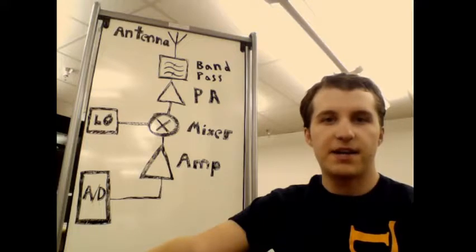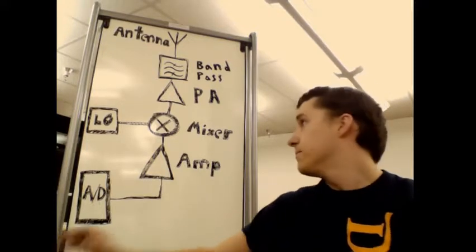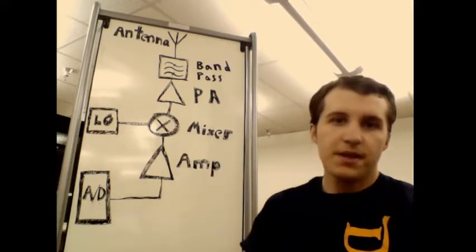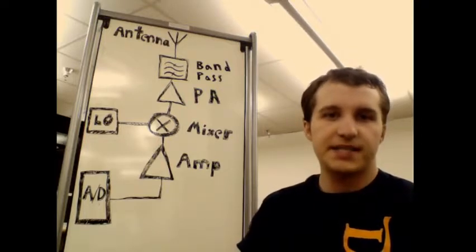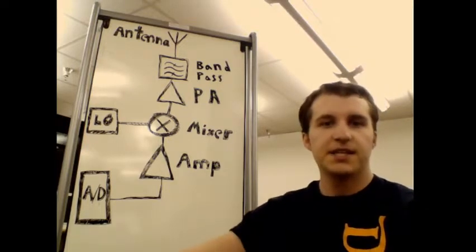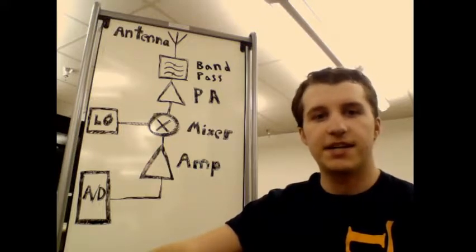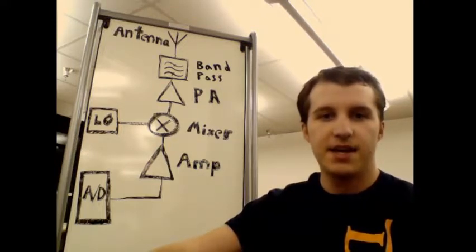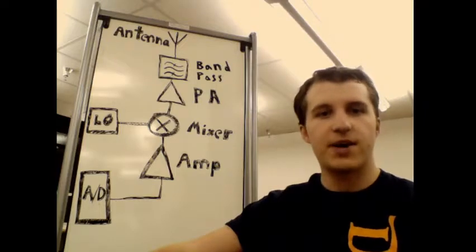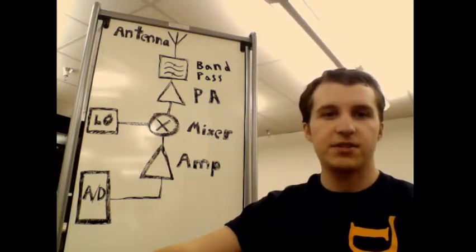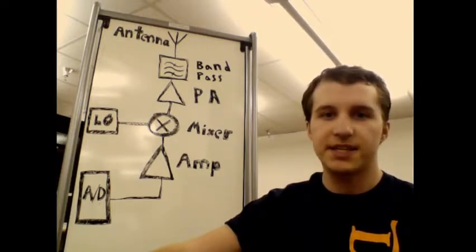After our signal is amplified, we must put it through a mixer. The mixer is a device that multiplies the signal by a carrier frequency such that the product signal is unique and can be differentiated from nearby signals. Every time you are listening to a radio and you change the channel, you are selecting a different carrier frequency so you can pick out a specific signal from the rest of the radio stations.